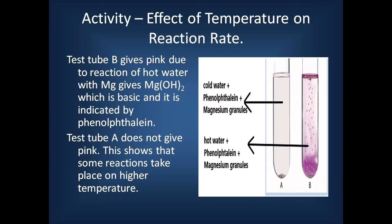The rate of reaction increasing with temperature can be shown by an activity. In test tube A, we take cold water with phenolphthalein and magnesium granules. In test tube B, we take hot water with phenolphthalein and magnesium granules. Only test tube B gives pink color because in hot water, magnesium granules react to give magnesium hydroxide, which is basic and reacts with phenolphthalein to give pink color. In cold water, magnesium does not react, so there is no pink color.